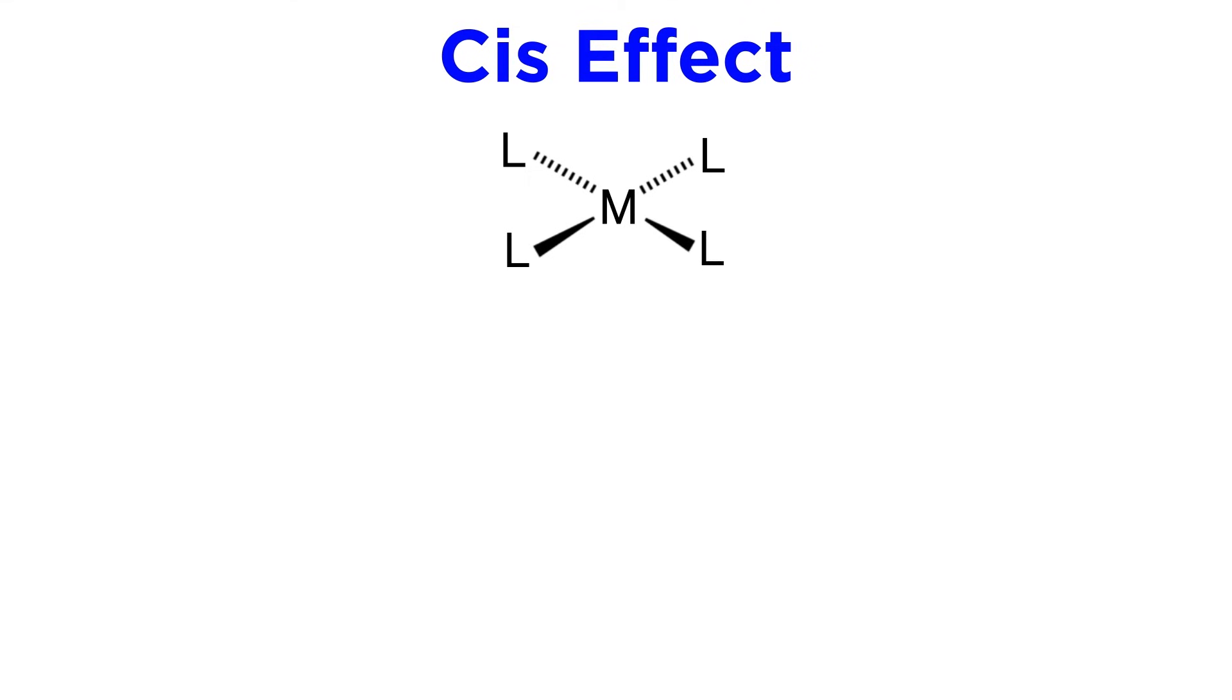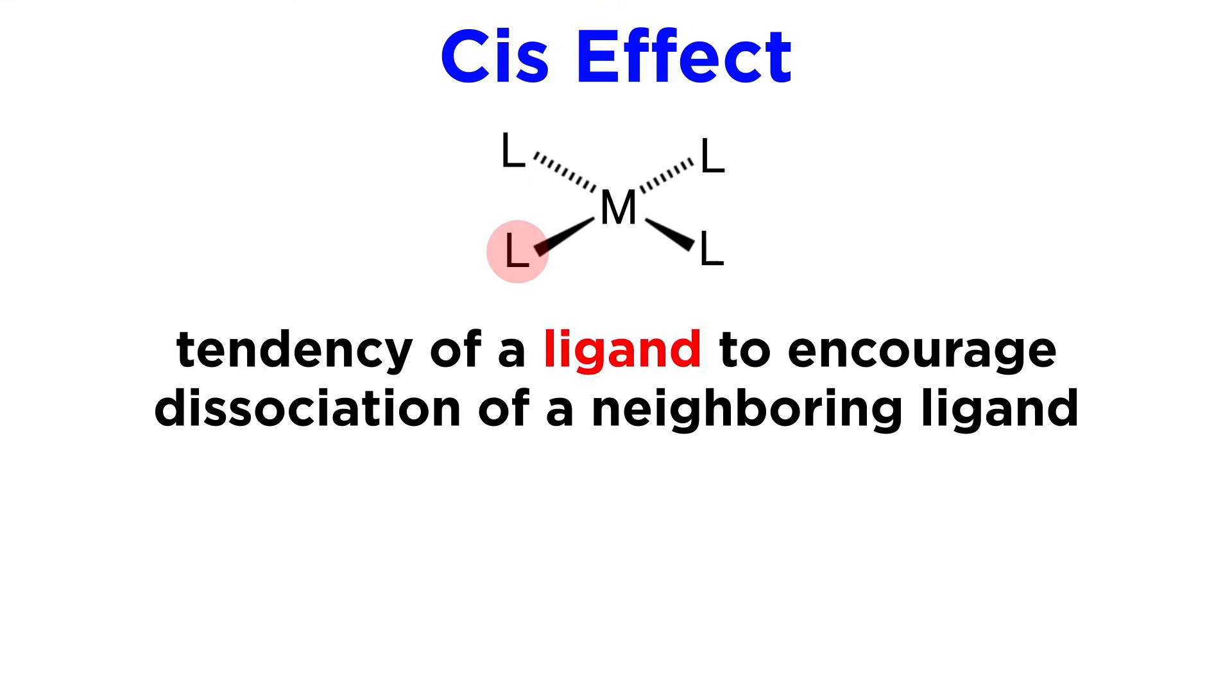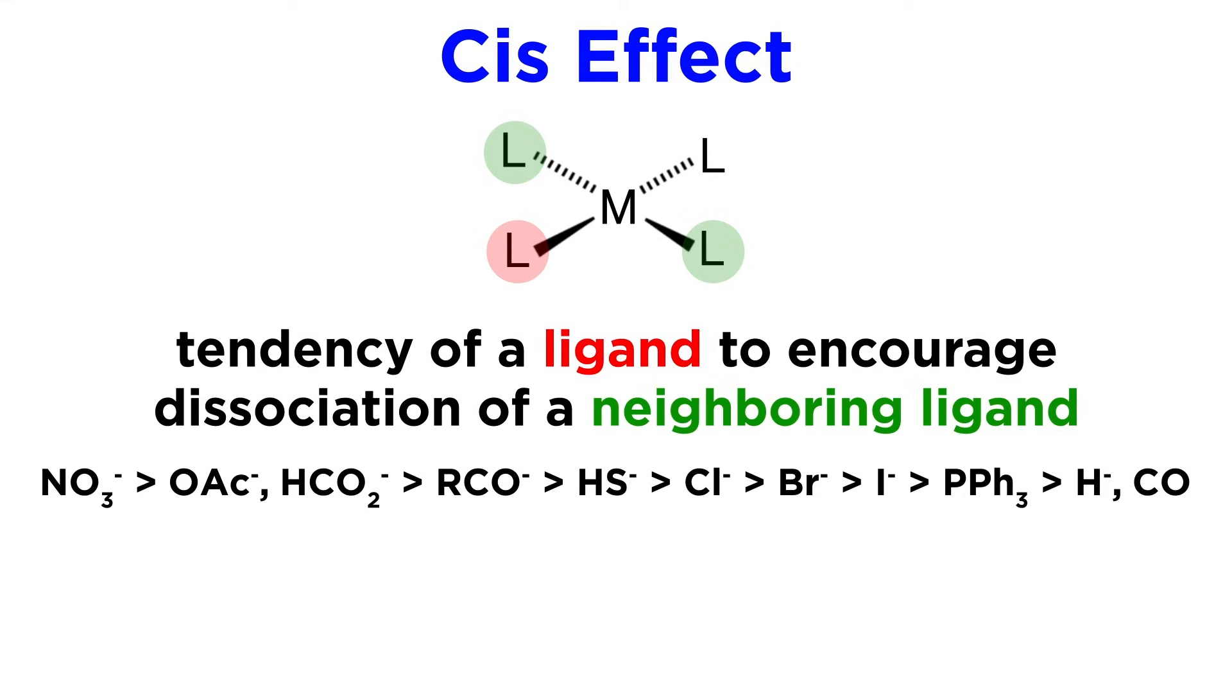We must also mention a related concept called the cis effect. This is the tendency of a ligand to encourage the dissociation of a neighboring ligand, one in a cis position. This is the general trend for the cis effect. The reason these ligands exhibit this behavior can be different from one to another. For the acetate ion, for example, this occurs because the ligand can become bidentate, and stabilize the intermediate through chelation at the site where the cis ligand is lost. For thiolate, chloride, and bromide, this is because they are able to form bridges where they weakly interact with a second metal atom, and for two of these interactions to occur with separate intermediate complexes, ligand dissociation must have occurred at the cis position for each of them. Still other ligands encourage dissociation by stabilizing square pyramidal intermediates through subtle electronic effects.